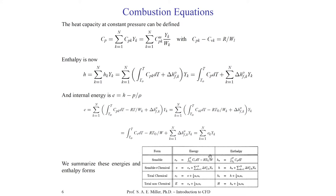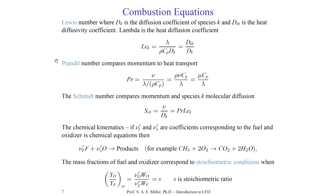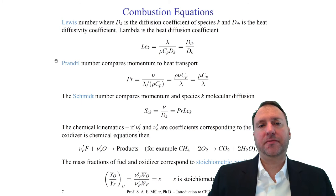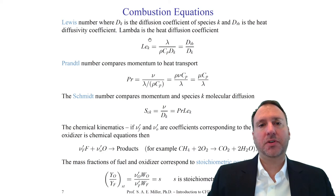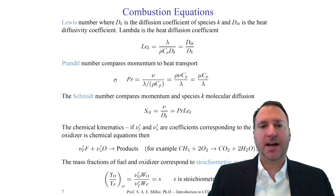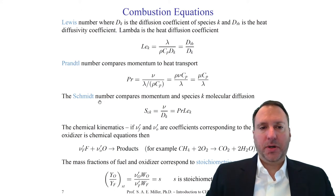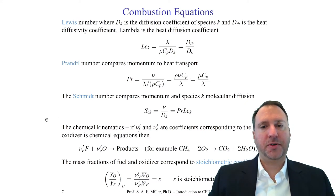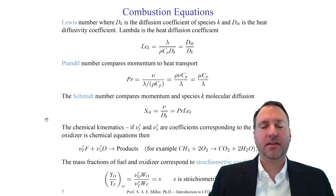Poinsot and his contemporaries define the sensible, sensible-chemical, total chemical, and total non-chemical energies. There are new non-dimensional numbers like the Lewis number, which defines a diffusion coefficient of species k — the heat diffusivity constant lambda. We also define the Prandtl number: mu times c sub p over lambda. The Schmidt number is the Prandtl number times the Lewis number. So these three non-dimensional parameters — beyond the Reynolds and Mach numbers — also appear in reacting flow equations.